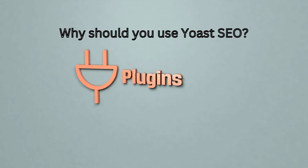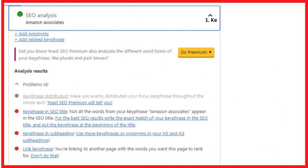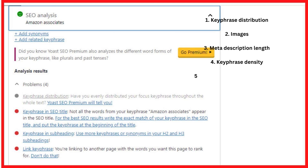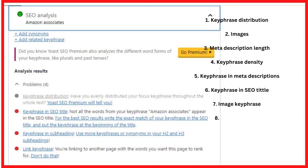Yoast SEO simplifies the basics of SEO, such as keyword focus, title tags, meta tags, and slugs. Furthermore, Yoast SEO provides you with useful insights on other essential aspects of SEO, such as: 1. Keyphrase distribution, 2. Images, 3. Meta description length, 4. Keyphrase density, 5. Keyphrase in meta descriptions, 6. Keyphrase in SEO title, 7. Image keyphrase, 8. Outbound links, 9. Inbound links.